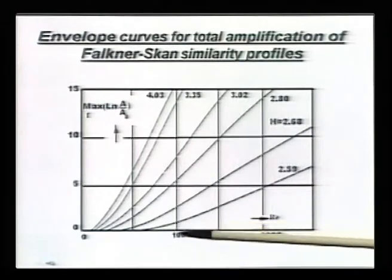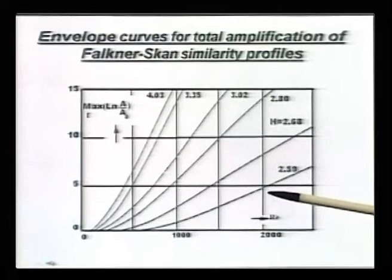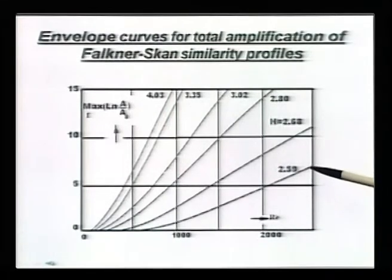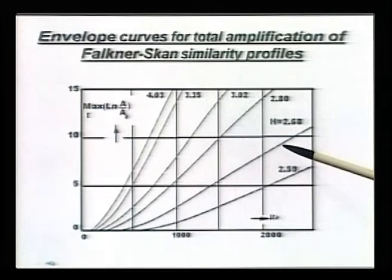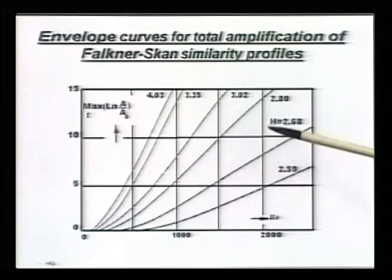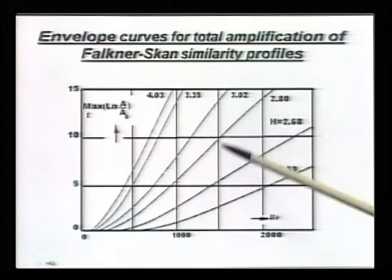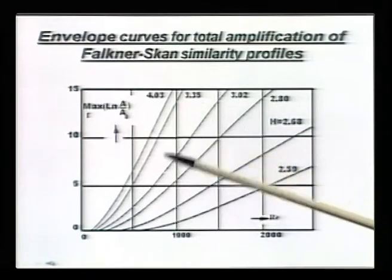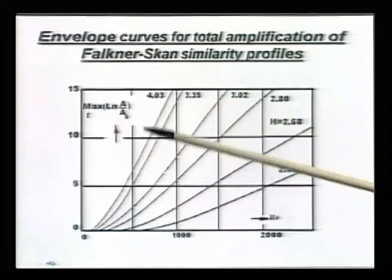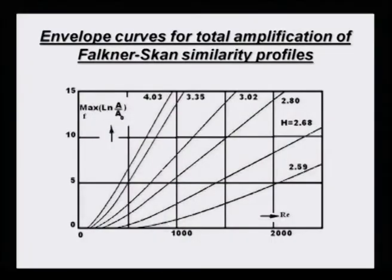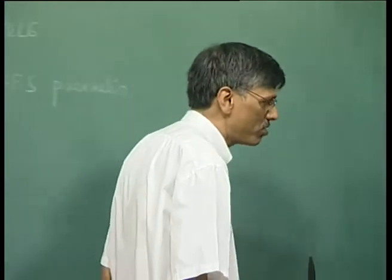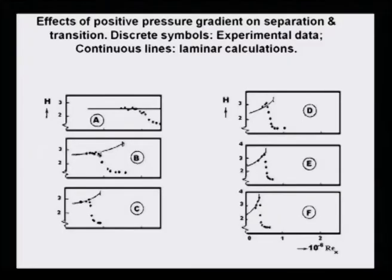At the same station, if your H is larger, the capital N factor is significantly larger. You can see that for a Blasius profile to go unstable - if I say e to the power 9, it would have to traverse a much longer distance. But if you look at H equal to 2.68, that value N equal to 9 has been reached much sooner. And as you approach the incipient separation profile, it is so unstable that it basically goes off the chart. So one should be in a position to talk about flow being stable or unstable by looking at the local pressure gradient.